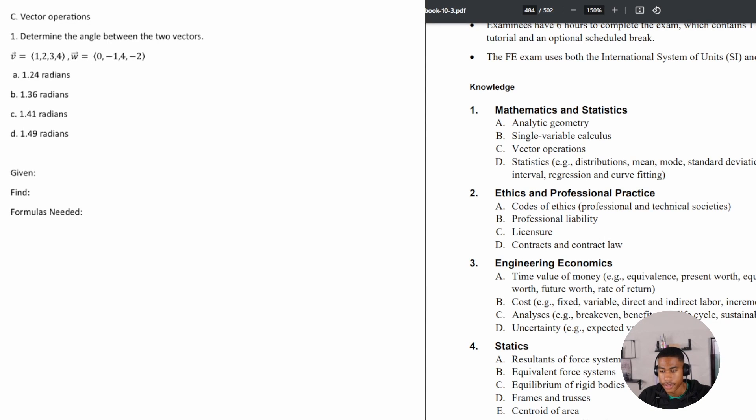All right, so today in this video we're going to be looking at some vector operations in the mathematics and statistics portion of the civil FE exam review. I want to jump right into the practice problems. This one, number one, says determine the angle between the two vectors. Vector V is one, two, three, four and vector W is zero, negative one, four, and negative two.